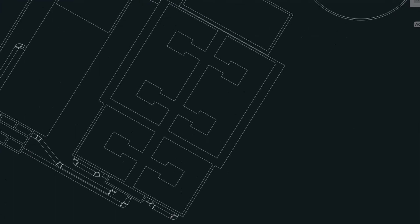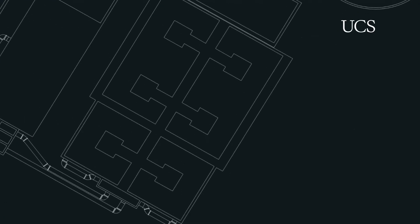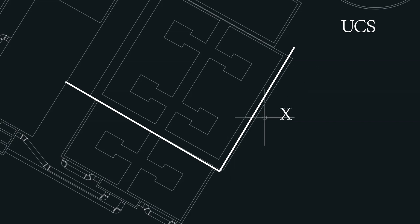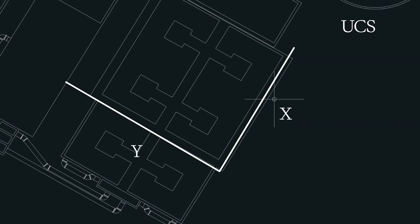Essentially, what you're doing is you're taking this x-axis here and the y-axis and reorienting that to the drawing. Now, imagine this x-axis coming over and aligning this way, and then the y-axis aligning this way. So let's first do that.